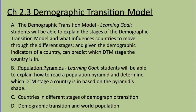This is Chapter 2, Kyoshi 3, Demographic Transition Model. The learning goal is for students to be able to explain the stages of the demographic transition model and what influences countries to move through the different stages. Given the demographic indicators of a country — like crude birth rate, crude death rate, and natural increase rate — they can predict which demographic transition stage the country is in.